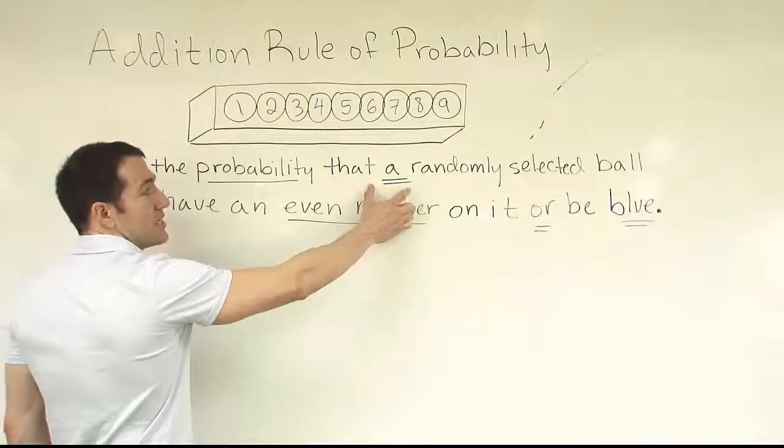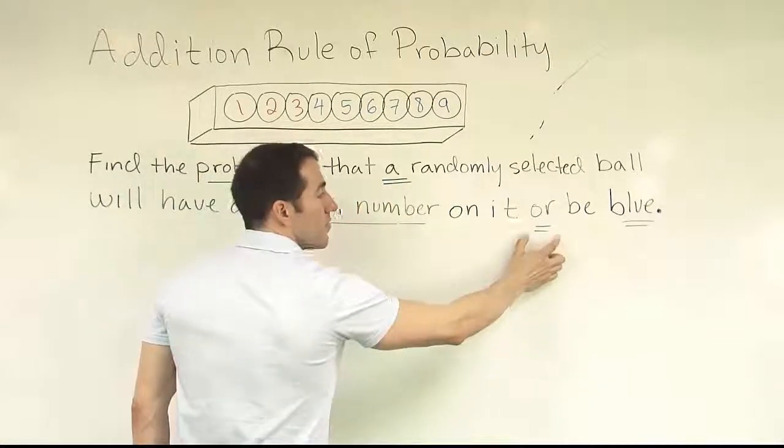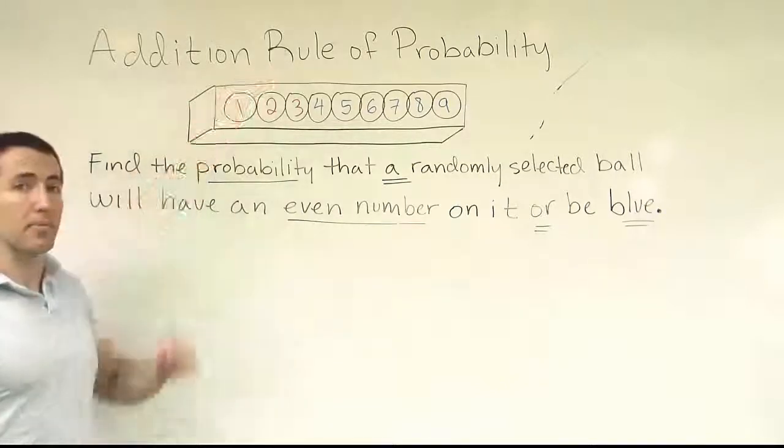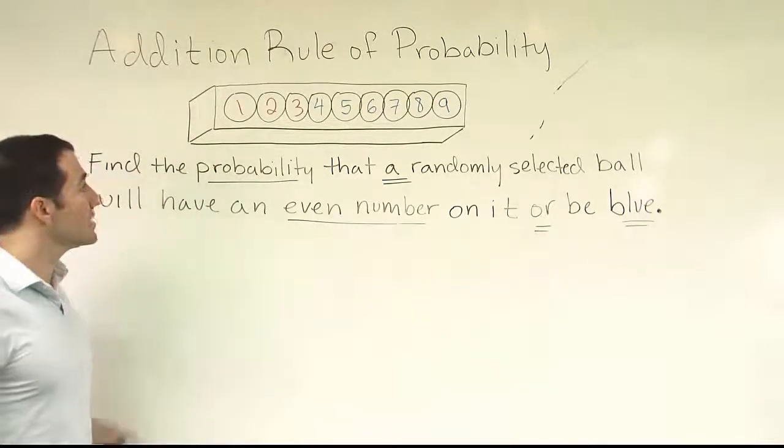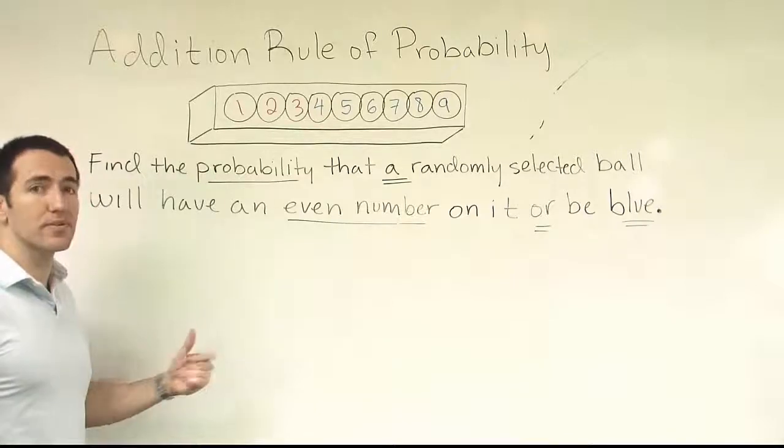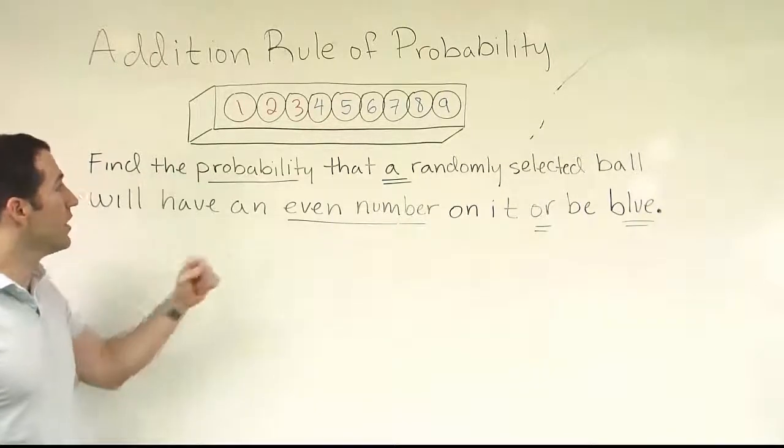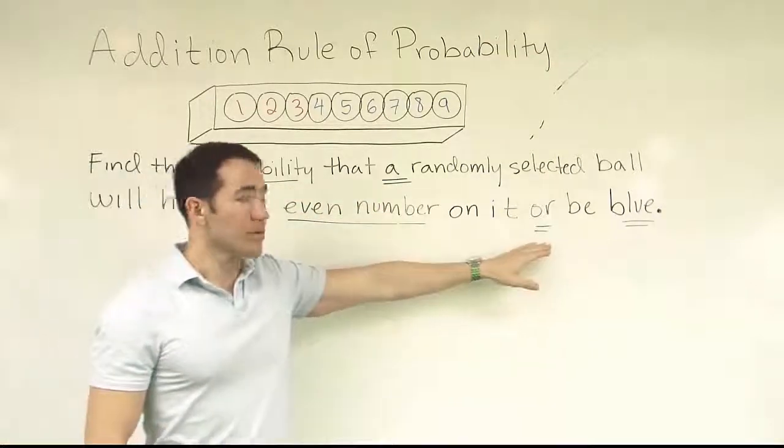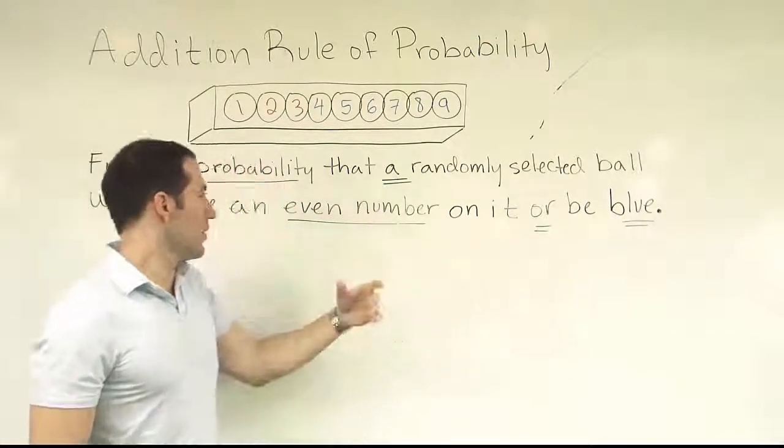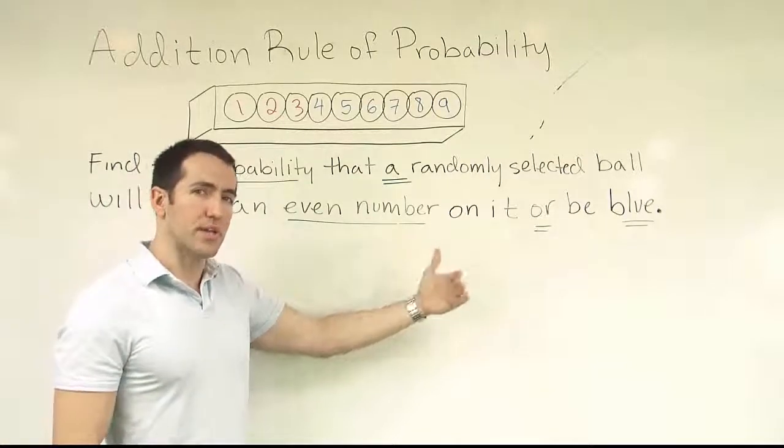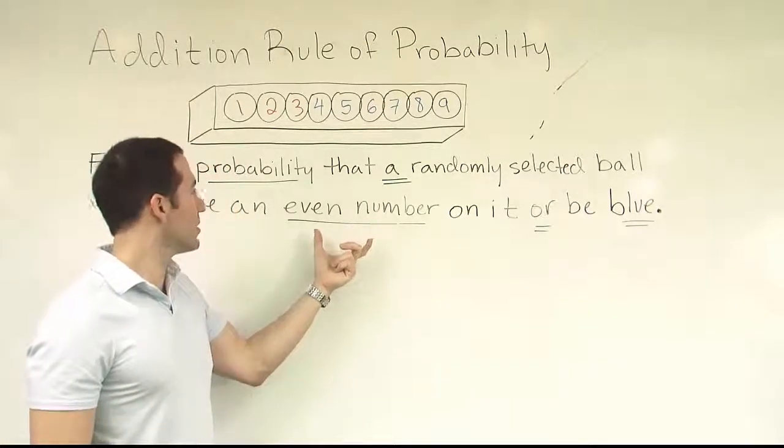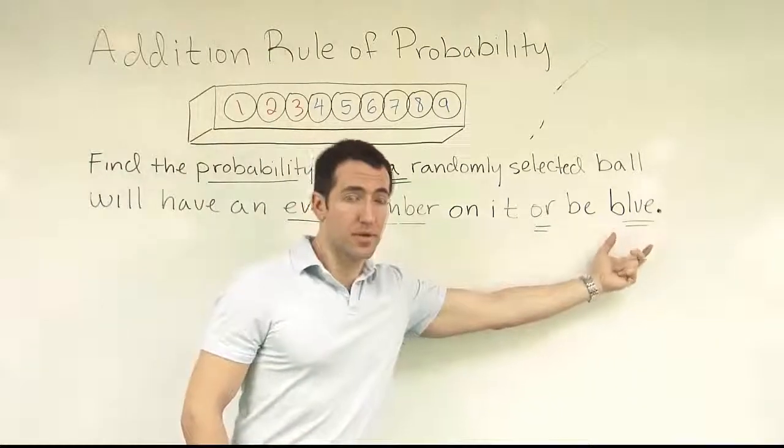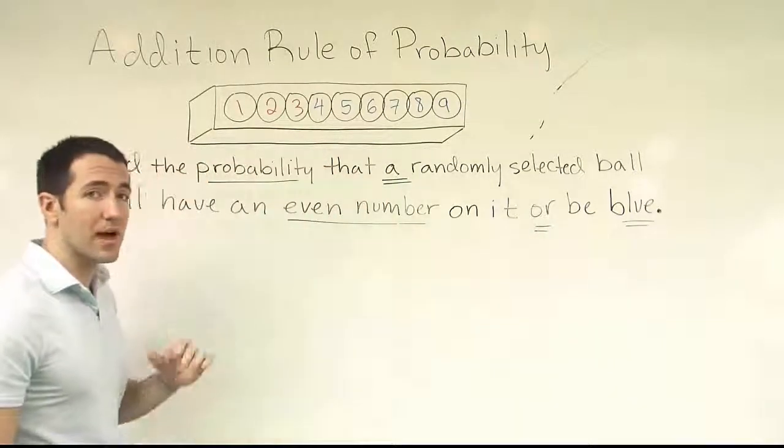Any problem that has one randomly selected item and the word or involved in it, and it's a probability question, is going to be clearly an addition rule of probability problem. So that's how you're going to identify on the exams and the homeworks that you're working with addition rule. Looking for the fact that it's asking you for probability, you're taking only one item, and you have this word or in the problem. A meaningful or, you know, sometimes the word or is used differently in the English language, but here it's clear that we're saying that this outcome can either be a ball that has an even number on it or it's a ball that's blue. So there are two possible ways the problem can turn out to be a success.